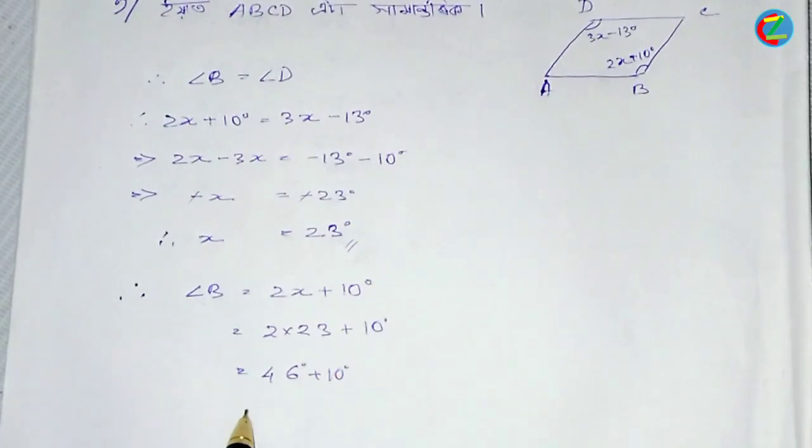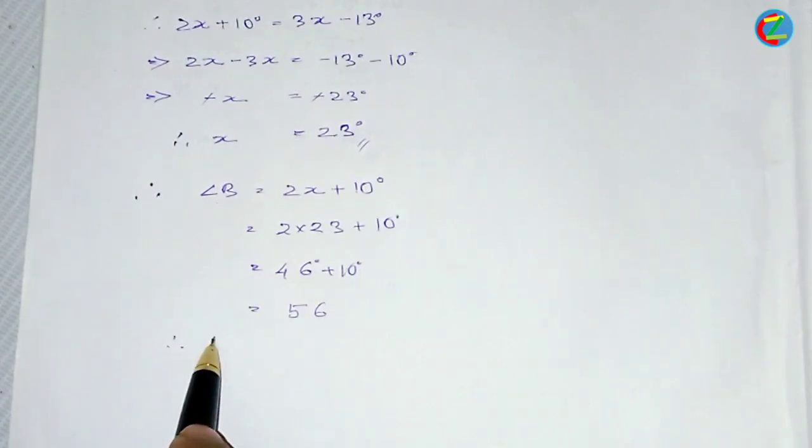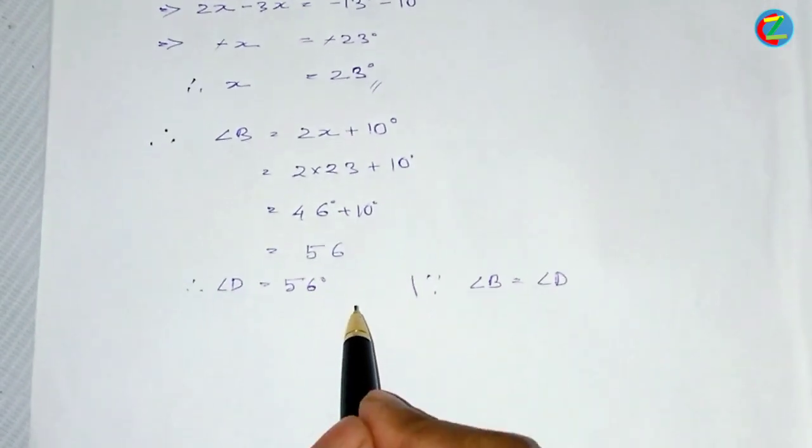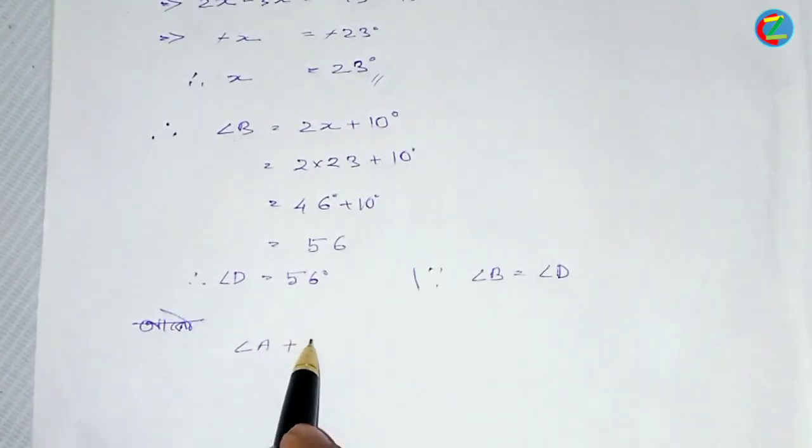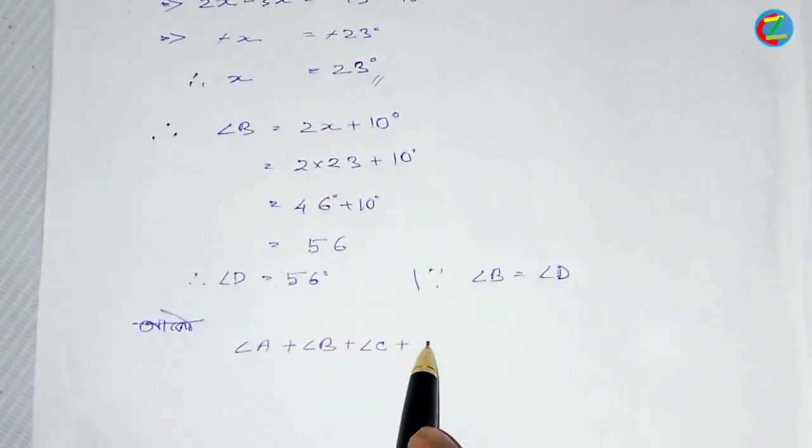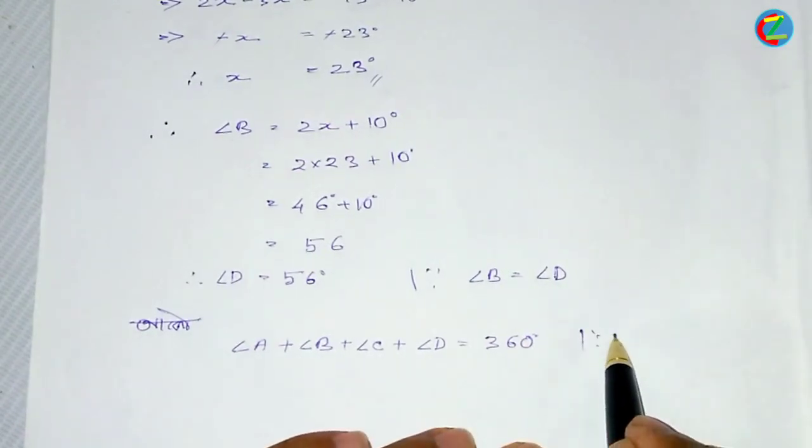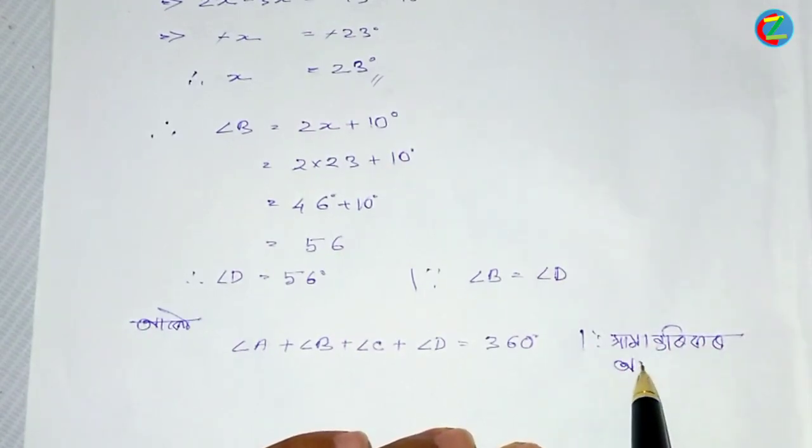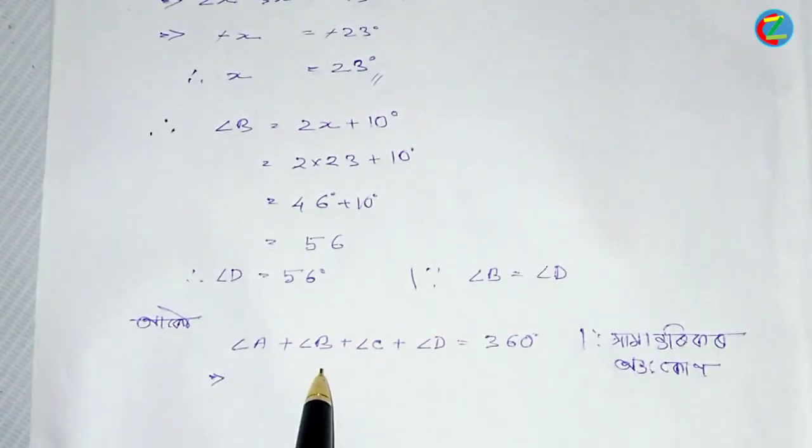23 into 2 is equal to 46 plus 10 degrees, which equals 56 degrees. This is the solution. Angle D is also 56 degrees. Angle A plus angle B plus angle C plus angle D is equal to 360 degrees.